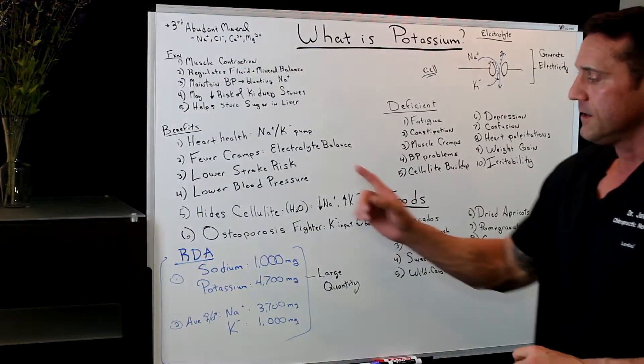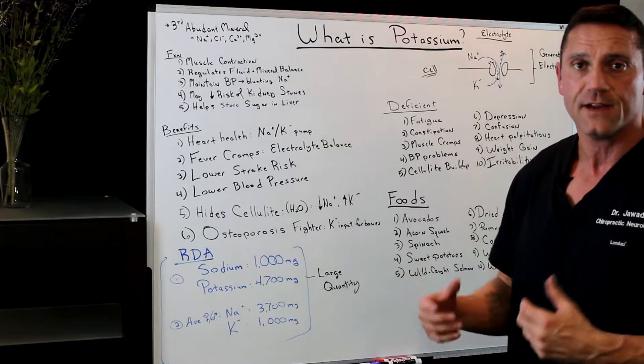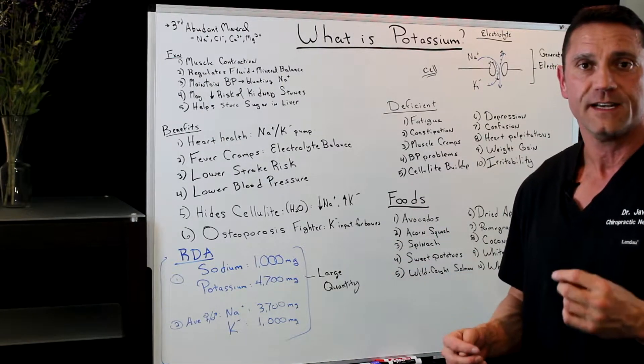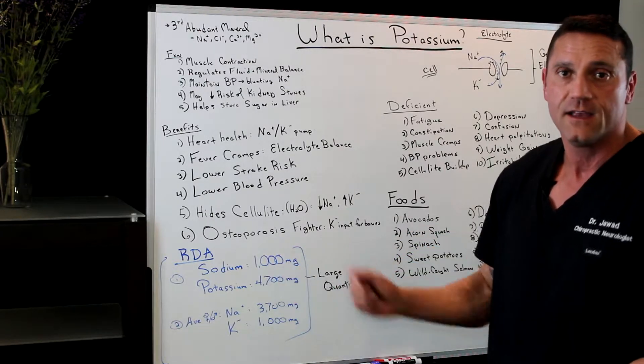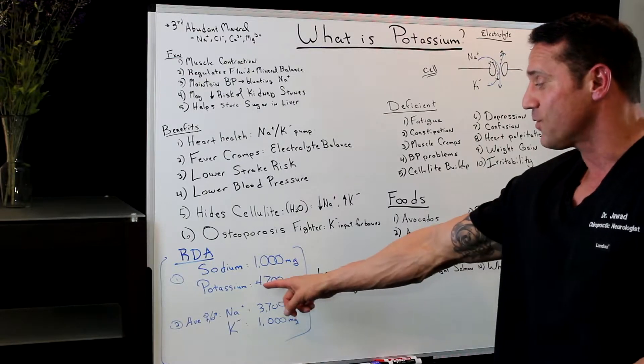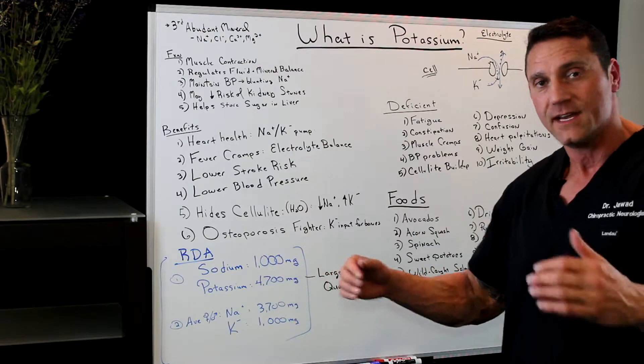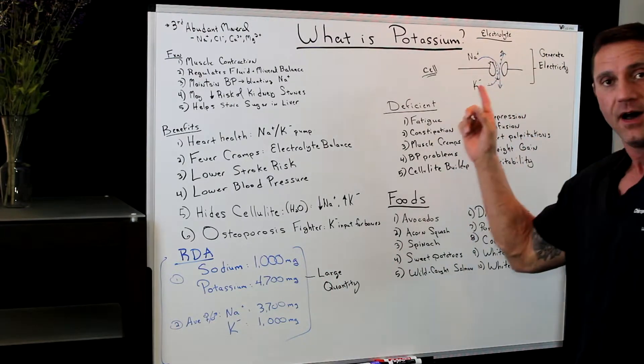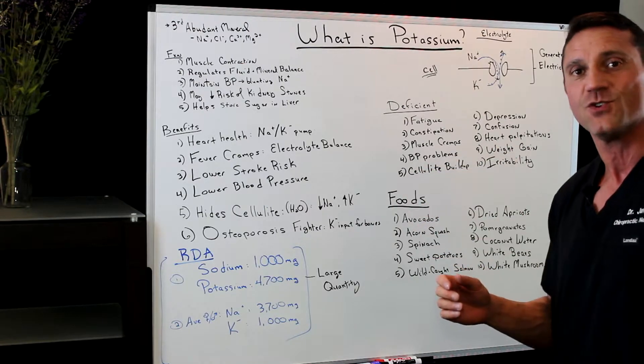The key thing is the RDA. If you look on this chart, the recommended daily allowance of sodium is 1,000 milligrams per day. The recommended daily allowance of potassium is 4,700 milligrams per day. That's over four times. With the sodium-potassium pump, you need more potassium to help function with the pump to get sodium out of the cell.